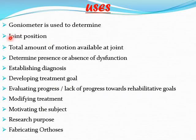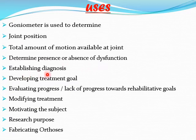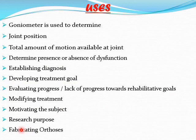A goniometer is used to determine joint position, to determine the amount of motion available at the joint, to determine the presence or absence of dysfunction, to establish the diagnosis and to develop treatment goals, to track progress and lack of progress towards rehabilitative goals, to modify treatment, to motivate the subject and for research purposes, and for fabricating orthoses.